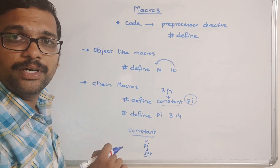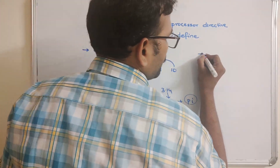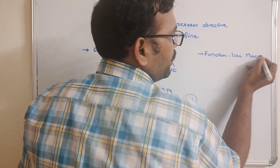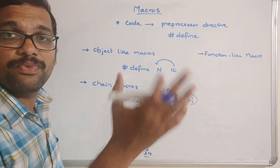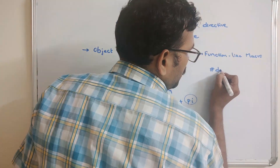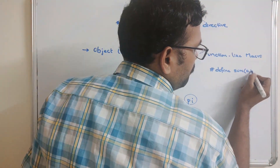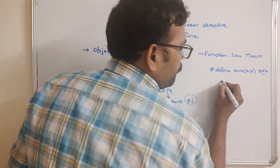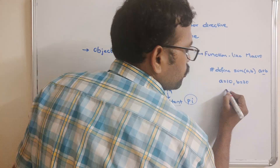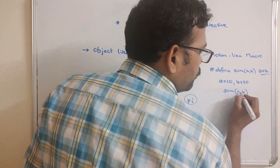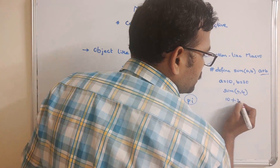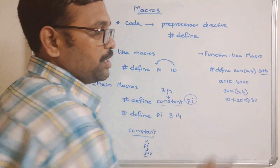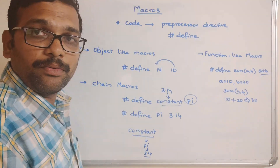The third category is function-like macros. Here we define a function-style macro: #define sum(a, b) a + b. Wherever we pass parameters, they are substituted in the expression. For example, if a=10 and b=20, calling sum(a, b) gives 10 + 20 = 30.